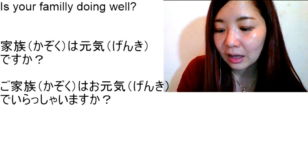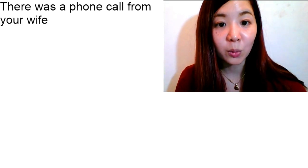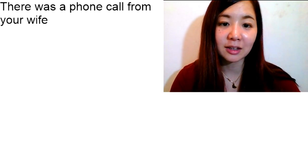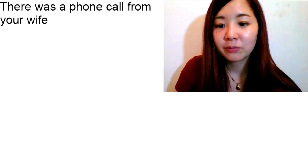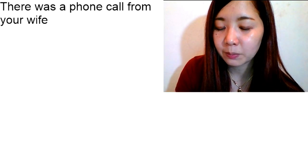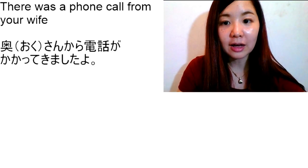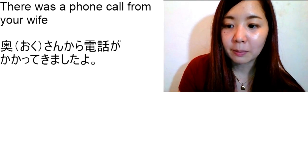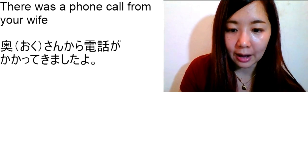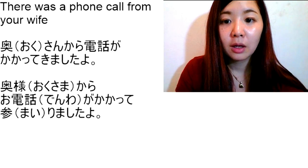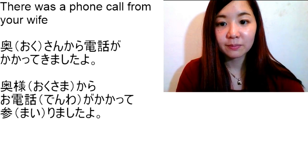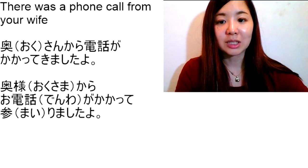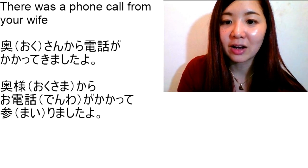The next one: 'There was a phone call from your wife.' Let's say you're working in the office and your boss went to the bathroom, and when he came back, you want to tell him there was a phone call. In a normal sentence: 奥さんから電話がかかってきましたよ. In polite style, 奥さん becomes 奥様, 電話 becomes お電話, and きました changes into まいりました. So it becomes: 奥様からお電話がかかってまいりましたよ.